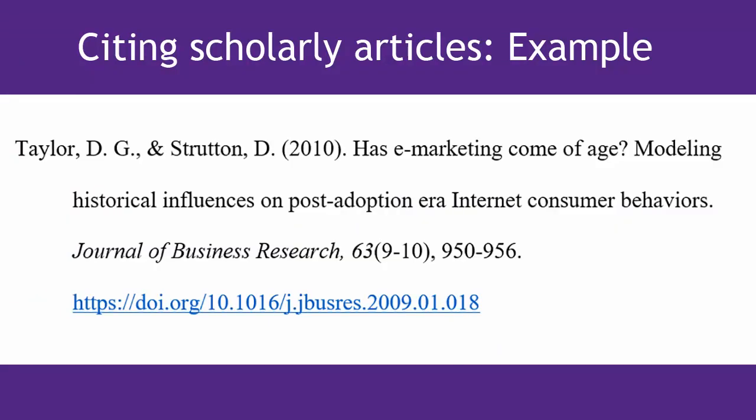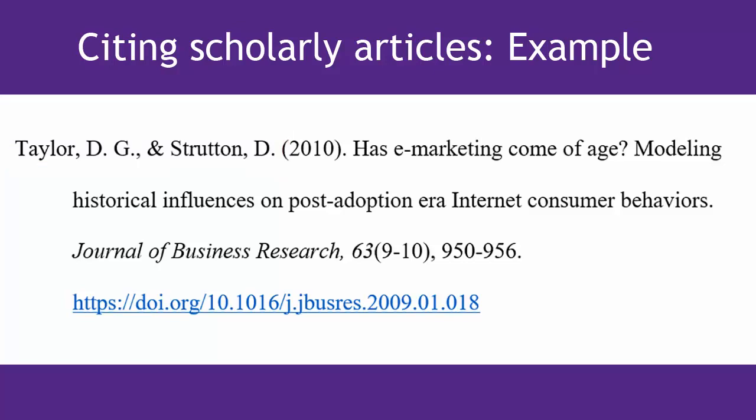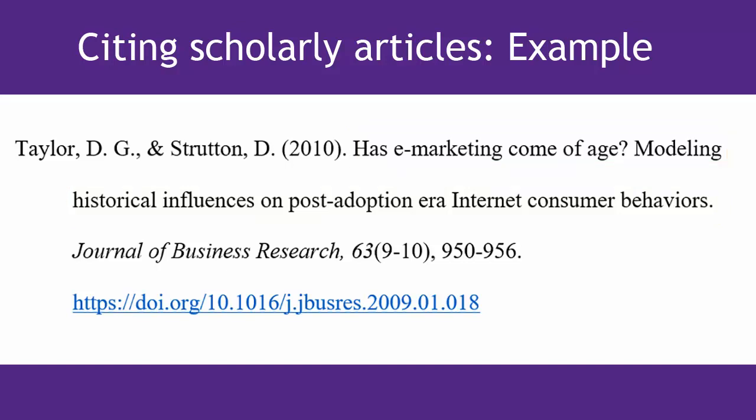Now that we've gathered all of the information, we can create our citation. Use an ampersand rather than the word AND between two authors, and use the last name and initials of the authors only, not the full first name. Note that the article title is capitalized just like the book title was, where we only capitalize the first word of the title and the first word of the subtitle, plus proper nouns.